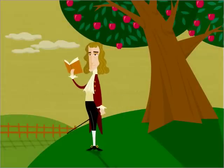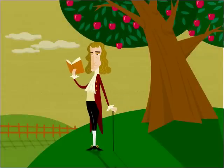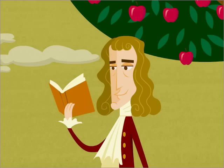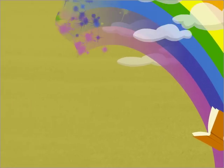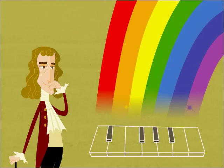Isaac Newton found answers to color in nature and music. Isaac Newton? The guy who discovered gravity? He thought that the order of rainbow colors must have a harmony, so he thought of colors as musical notes.